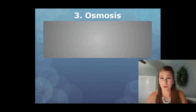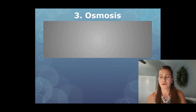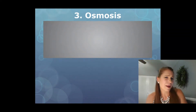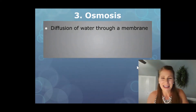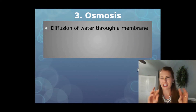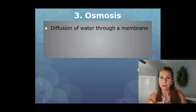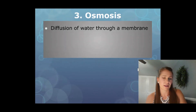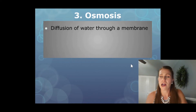The third type of passive transport we'll talk about today is osmosis. If you're older, you've probably heard of the movie Osmosis Jones — it's a pretty great movie, animated, with Bill Murray — but osmosis itself is the diffusion of water through a membrane. So it is diffusion, but it's specific to water. You may have also seen this on your water bottle: it's been purified by reverse osmosis, which involves pulling water through a membrane or filter in order to clean it.